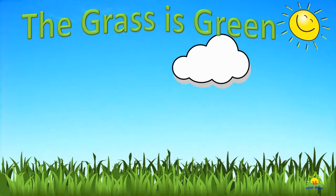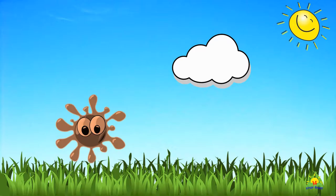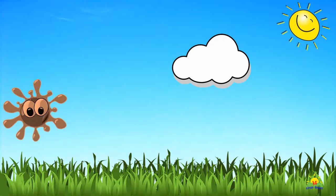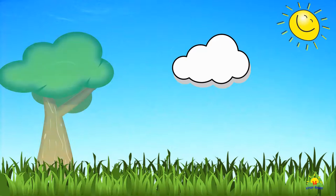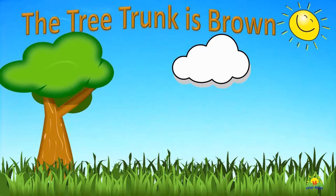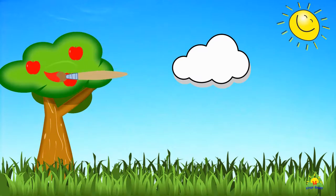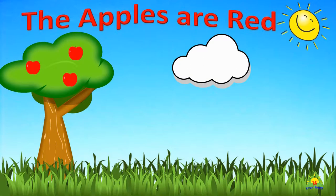The grass is green. Brown, brown — the tree trunk is brown. Red, red — the apples are red.